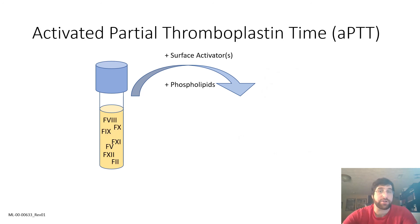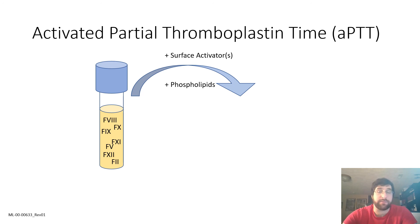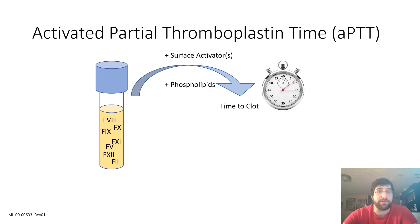The activated partial thromboplastin test, or APTT, monitors the enzymes and cofactors involved in the contact pathway or the intrinsic cascade. As with the PT, citrate anticoagulated blood is used. For the APTT, it is mixed with phospholipid vesicles and at least one surface activator — examples include silica, ellagic acid, and sulfatide, though there are others. Time to clot formation is then recorded, typically in the 30 to 50 second range, though it is dependent upon the reagents chosen.